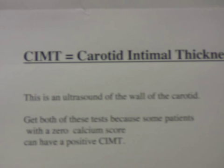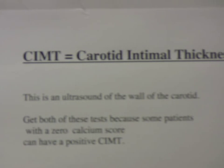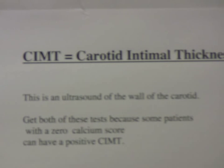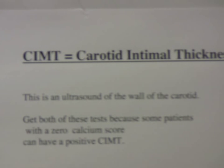Step 3: get an ultrasound of your neck. Specifically, get a CIMT, or what is called a carotid intimal thickness. This is not the usual duplex or triplex ultrasound — this is an ultrasound of the wall of the carotid. Get both a CAC and a CIMT, because if the CAC is zero, you can still have a positive CIMT. This shows that indeed you do have atherosclerosis, or atheroma, in the wall of your carotid.